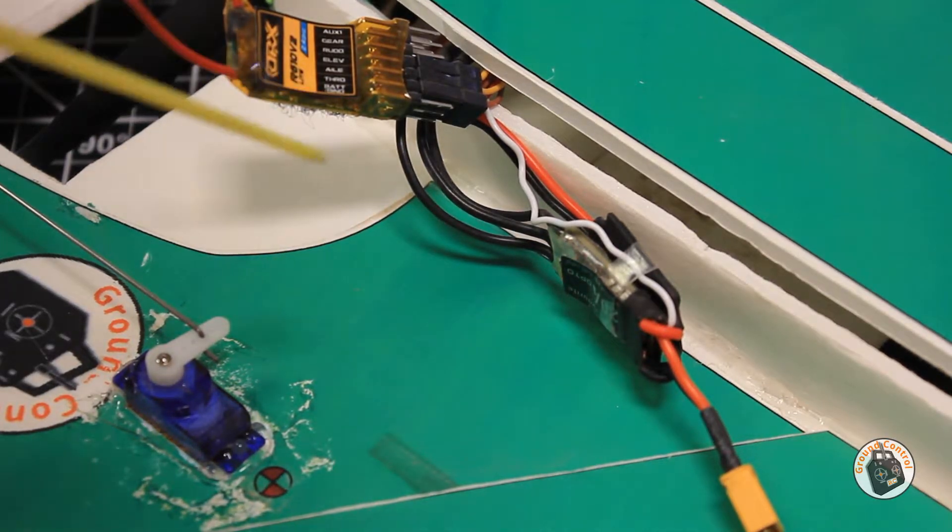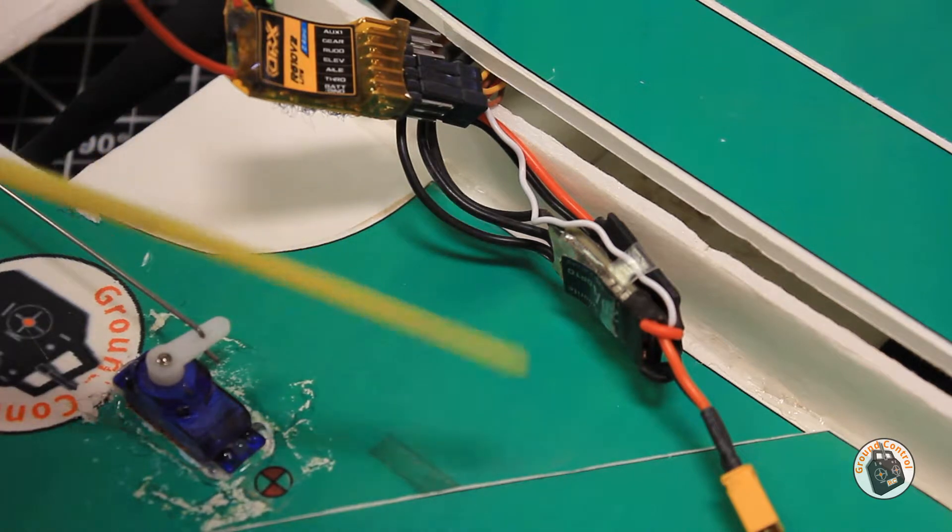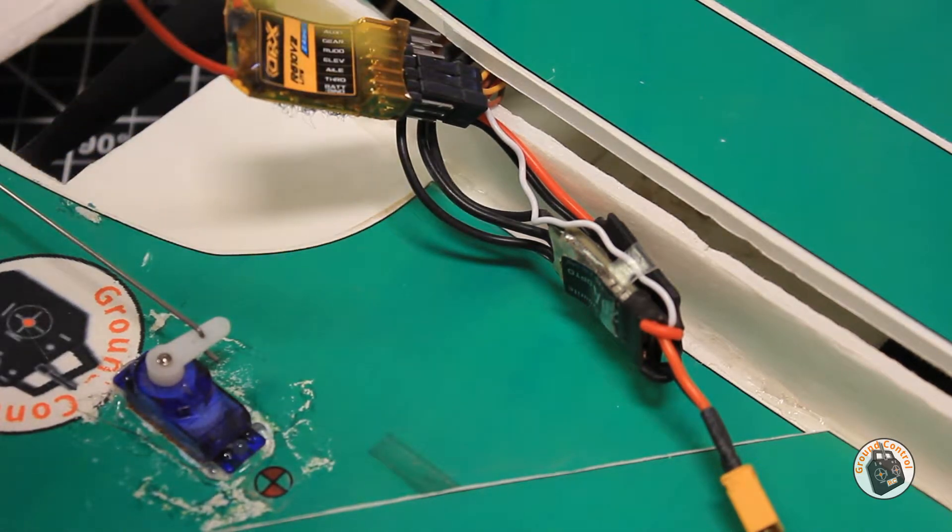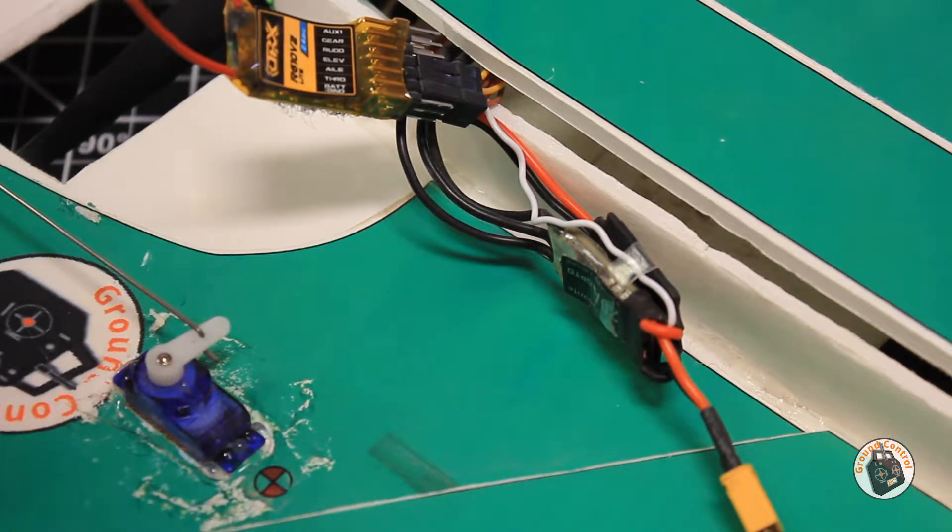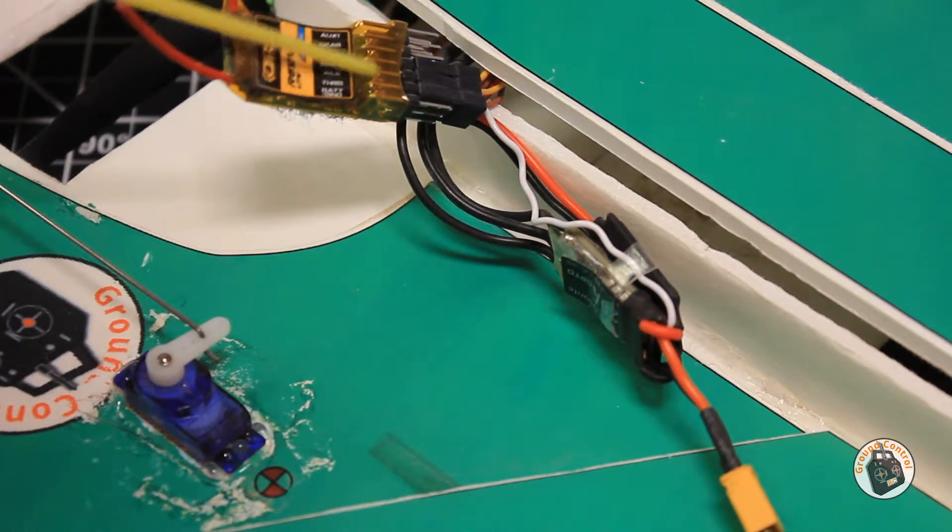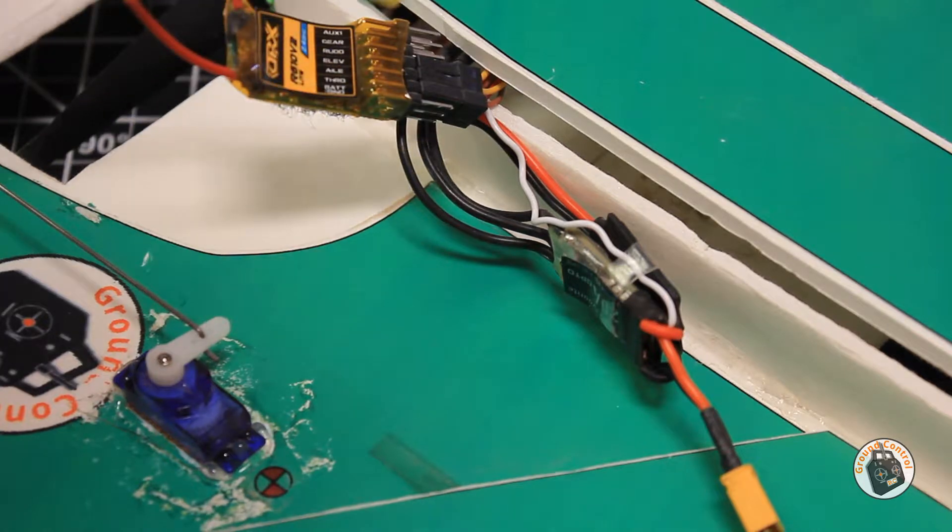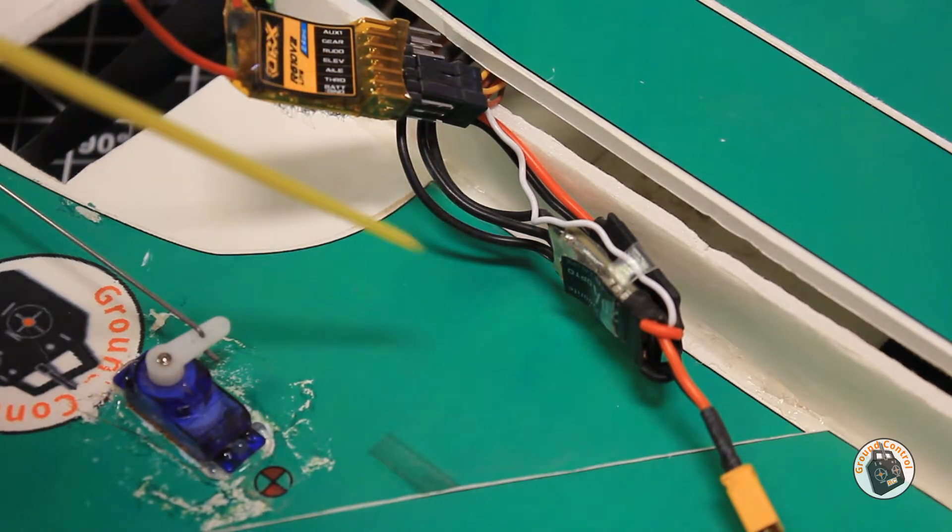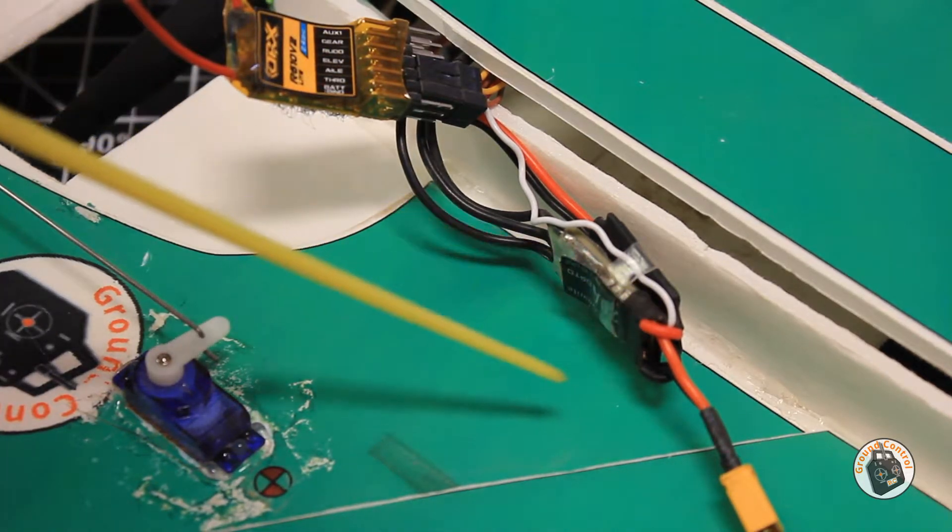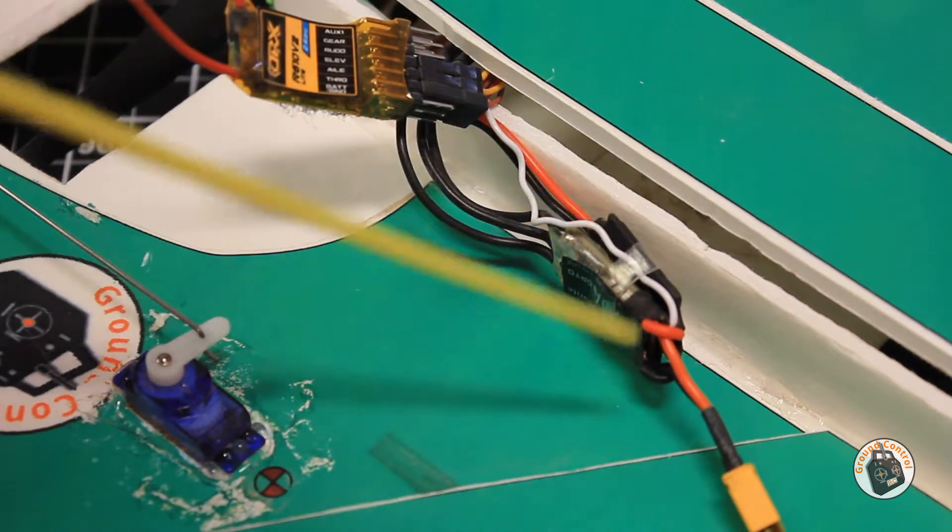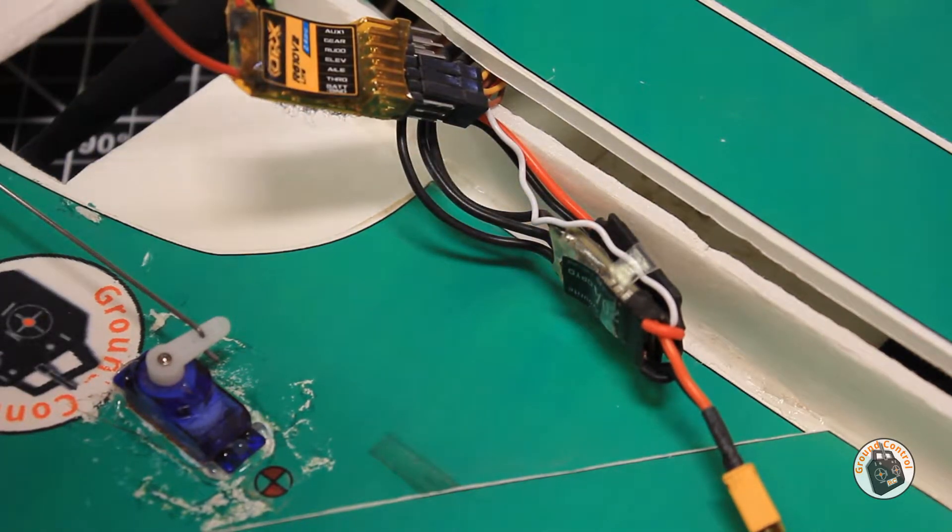The only disadvantage to doing this in the original video was the fact that you had two connections to your receiver rather than just one. You had the connection with the signal and ground wire from the opto ESC to the receiver for your throttle, and then you had to use an auxiliary channel on the receiver using the servo connector from the switching voltage regulator for the power and ground supply power to the receiver.